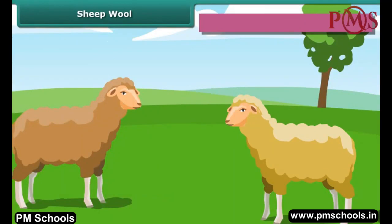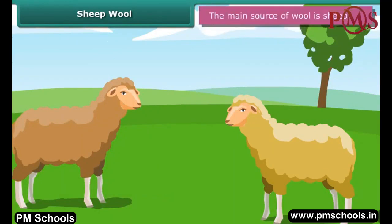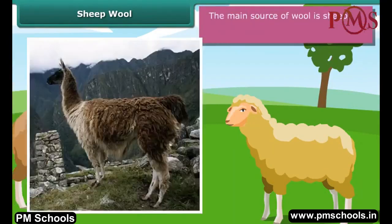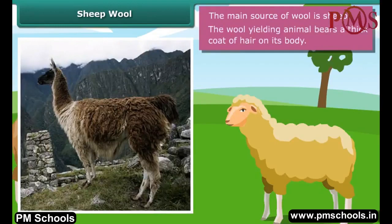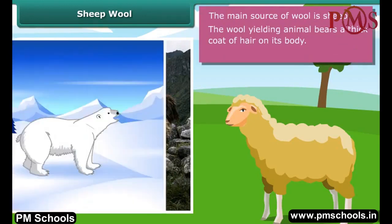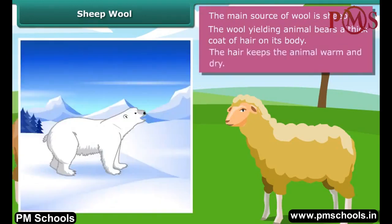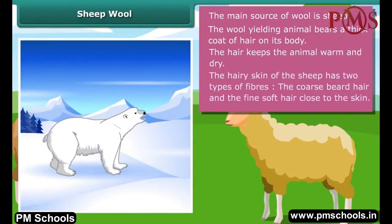The main source of wool is sheep. The wool-yielding animal bears a thick coat of hair on its body. The hair traps air, and since air is a poor conductor of heat, the hair keeps the animal warm and dry, allowing it to live in cold and harsh climates.